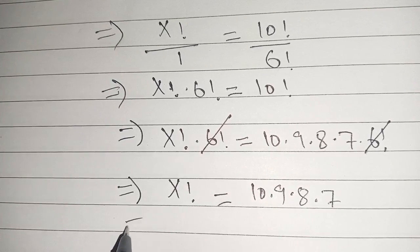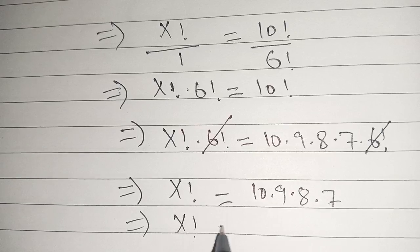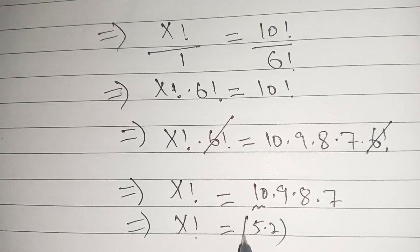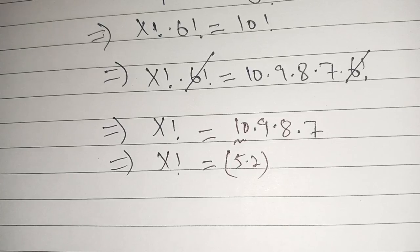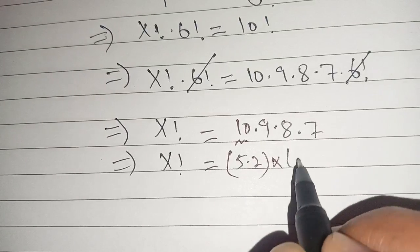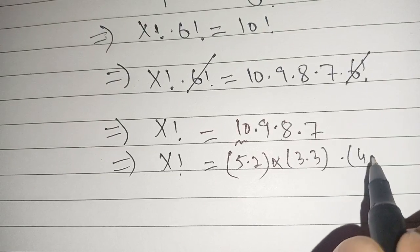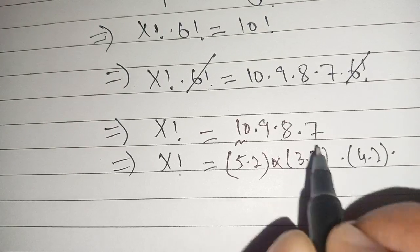Now we can break it down as 10 can be written as 5 times 2, and 9 can be written as 3 times 3, and 8 can be written as 4 times 2, and 7 can be written as 7 times 1.